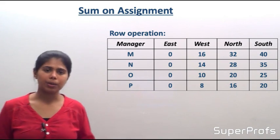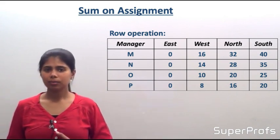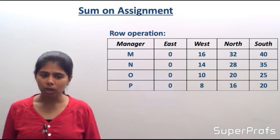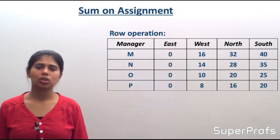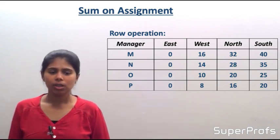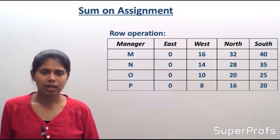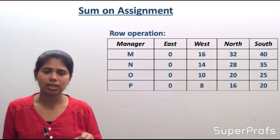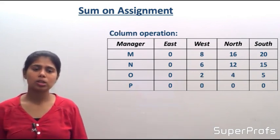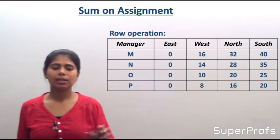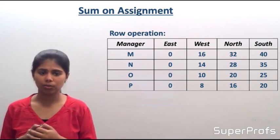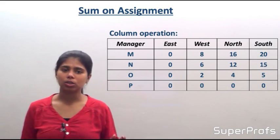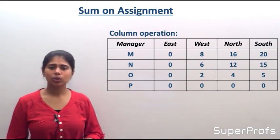Now we perform the column operation — deducting the smallest number in each column from all elements of that column. In the first column all values are 0, so nothing changes. In the second column the smallest number is 8, so: 16−8=8, 14−8=6, 10−8=2, giving column values 8, 6, 2, 0. Similarly, we deduct 16 and 20, which are the smallest values in columns 3 and 4, to get the matrix after column operation.